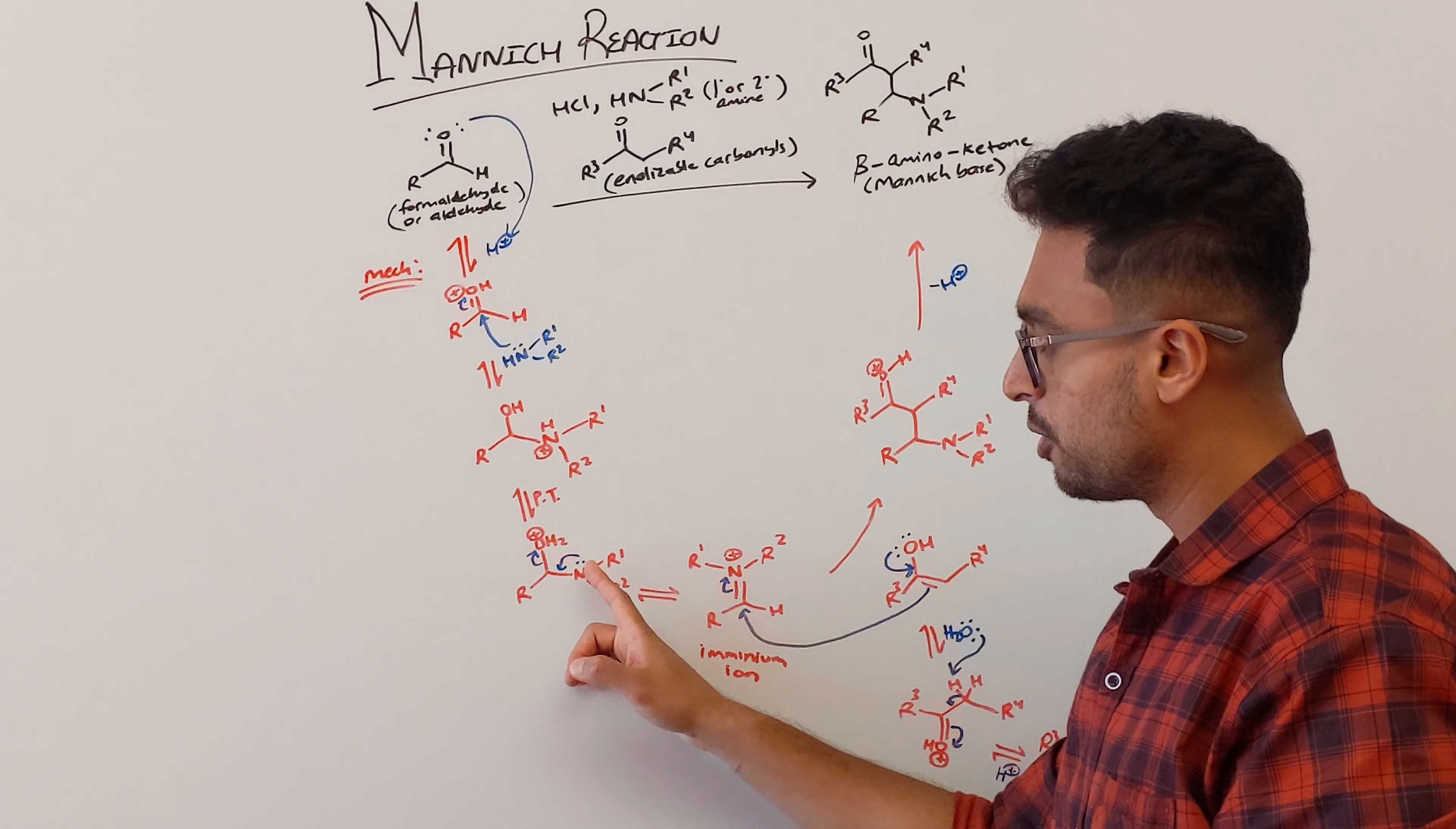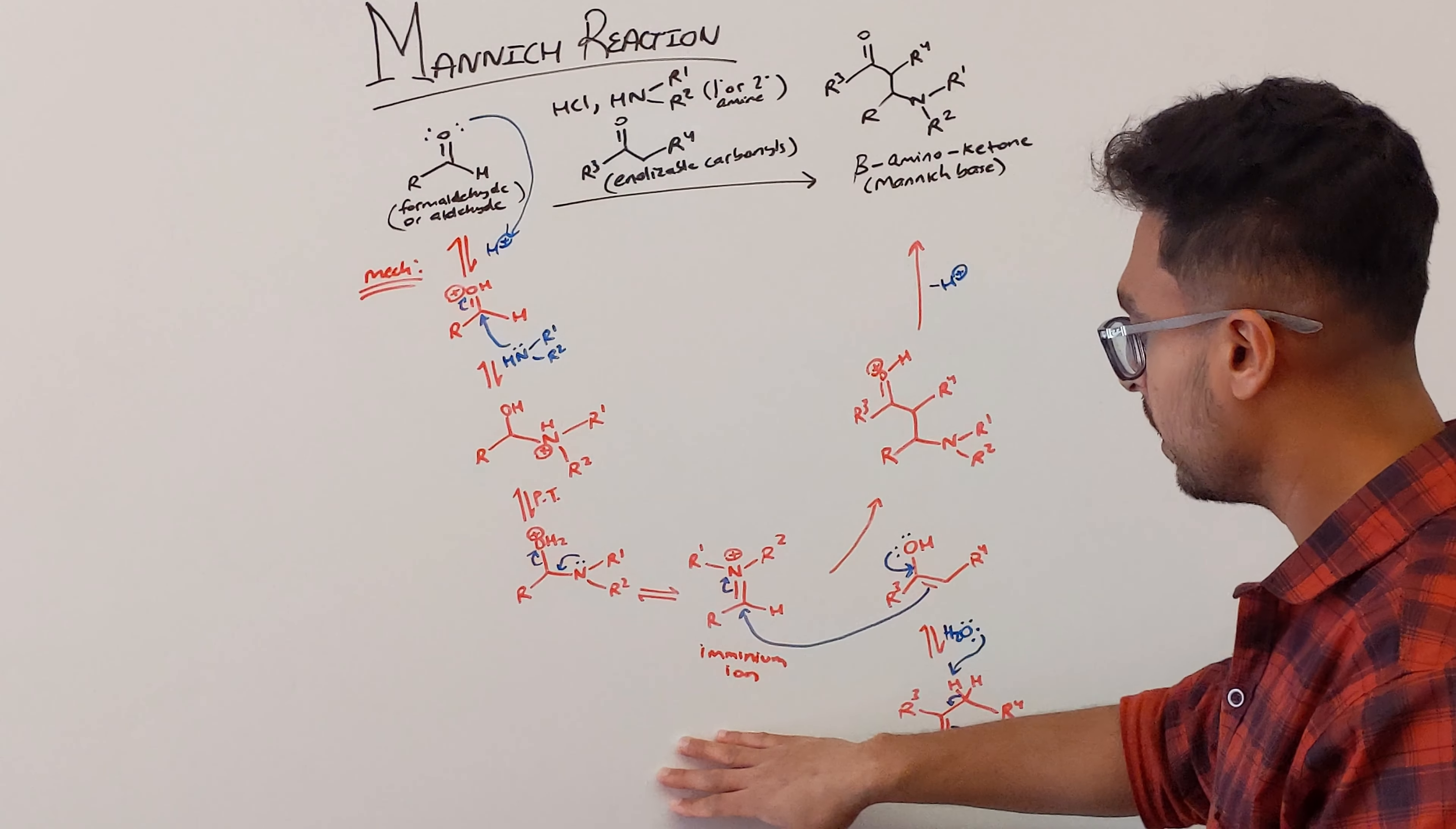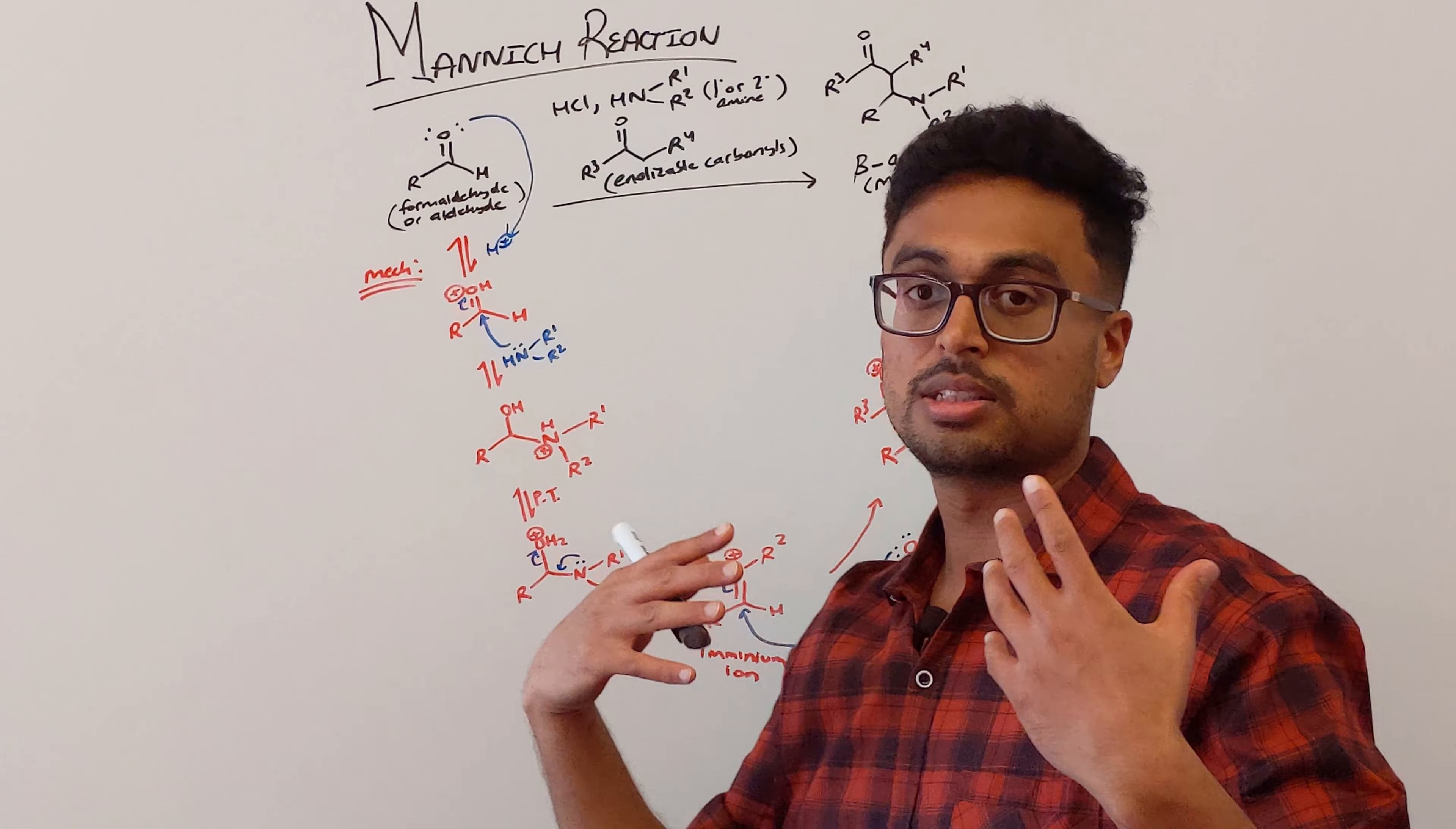Now you generated a good leaving group which is water here. So that lone pair from nitrogen is going to come down. It's going to release that water. Now you generate an iminium ion and this is where stuff gets interesting.